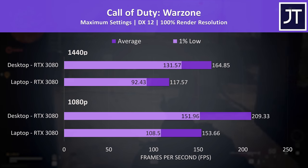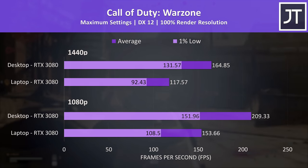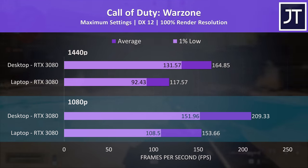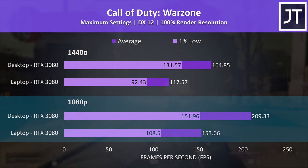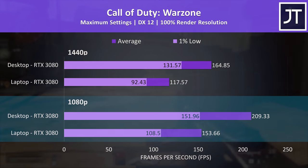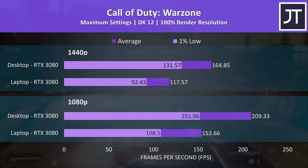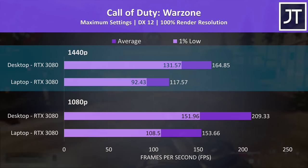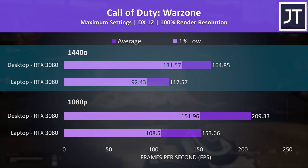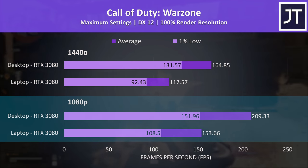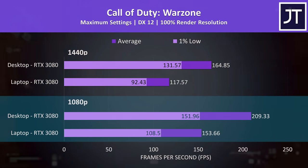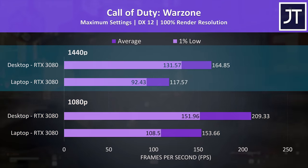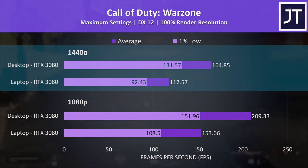Call of Duty Warzone was tested with all settings maxed out. The 1% lows from the desktop 3080 were close to the average FPS of the laptop 3080 at 1080p, then easily ahead at the higher 1440p resolution. In terms of average FPS, the desktop was 36% faster at 1080p and 40% faster at 1440p.